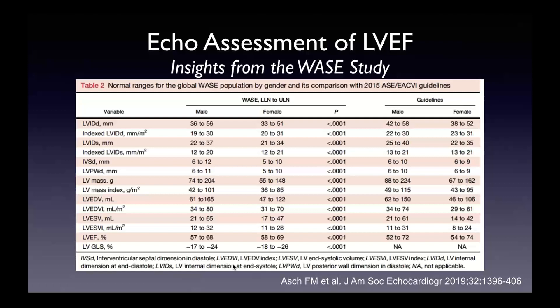The WAYS study — World Alliance of Echo Societies evaluation study — completed in 2018–2019, with labs across the world participating, is a large registry-based study of normal echocardiograms. Patients were excluded if they had significant cardiac abnormalities such as hypertension, coronary disease, or cardiomyopathy. From a WAYS publication in JACE 2019 focusing on the left ventricle, LV ejection fraction in women tends to be slightly greater. The range of normals is 57 to 68% for men and 58 to 69% for women.